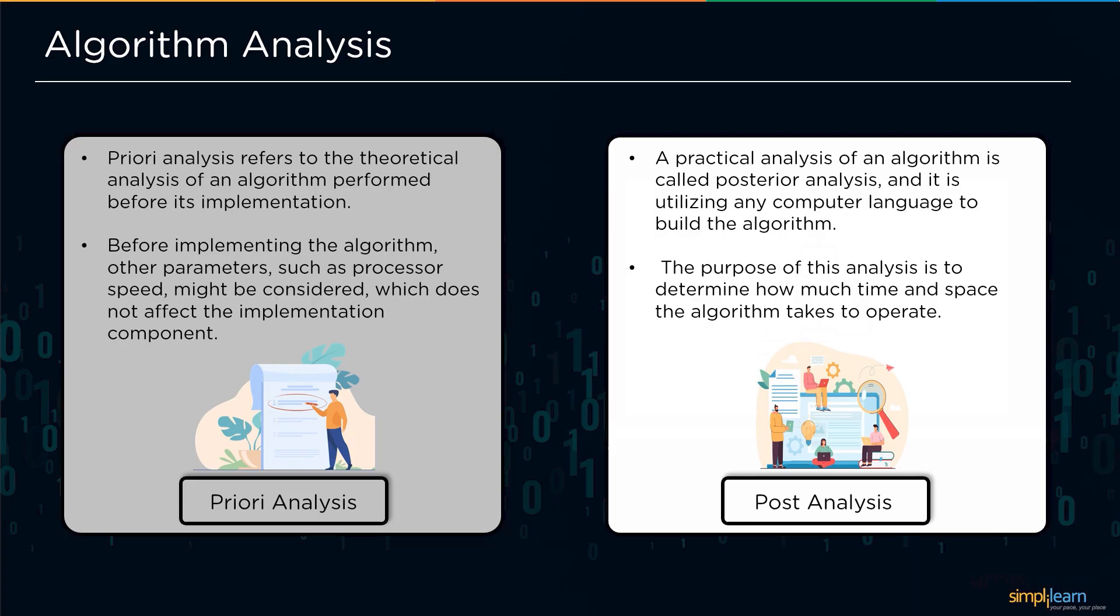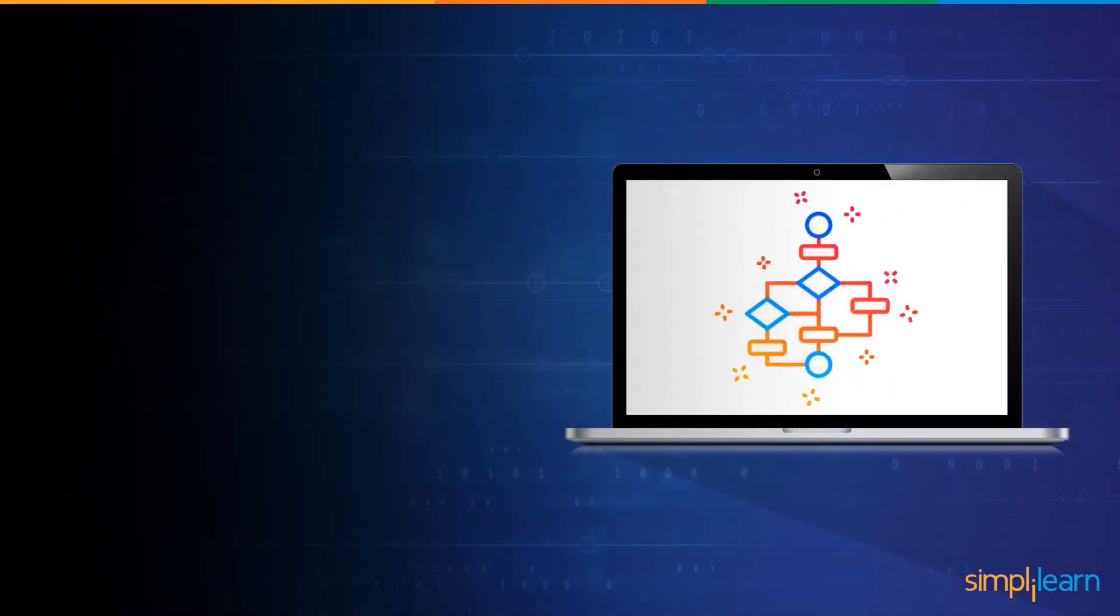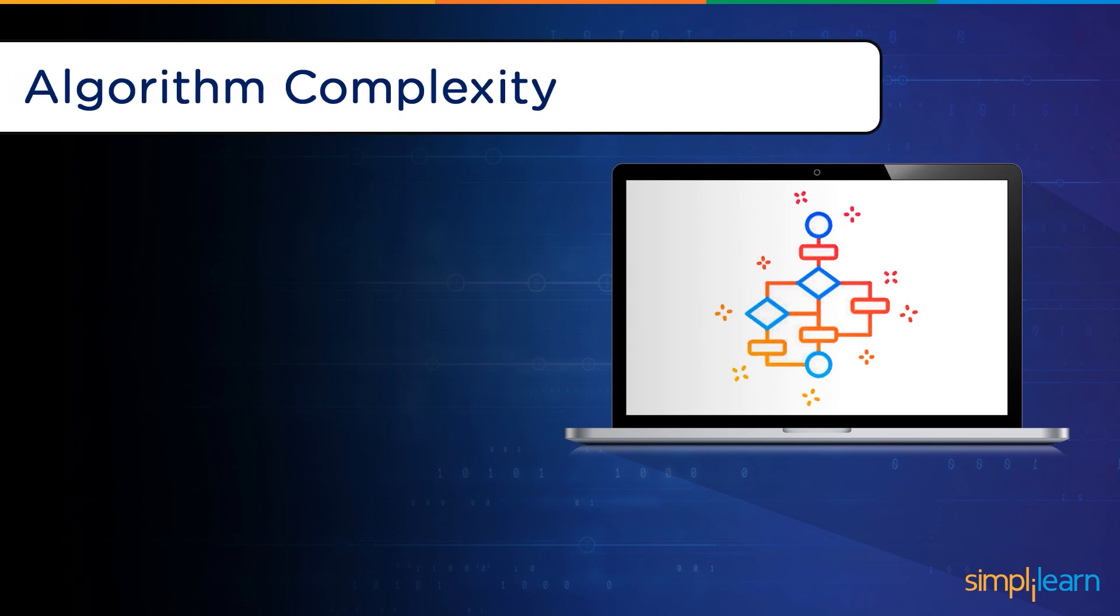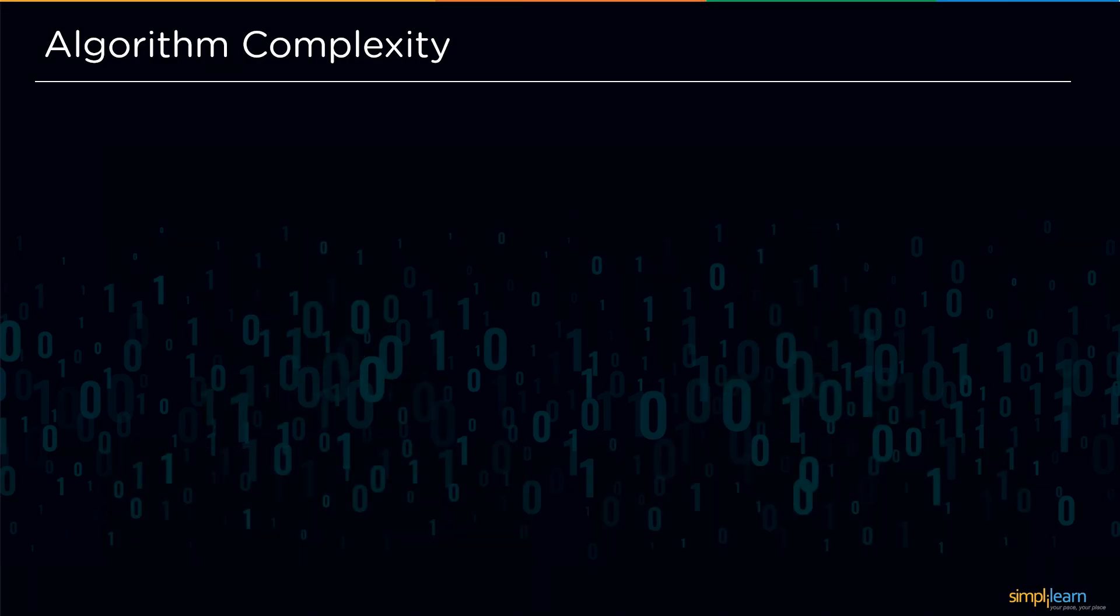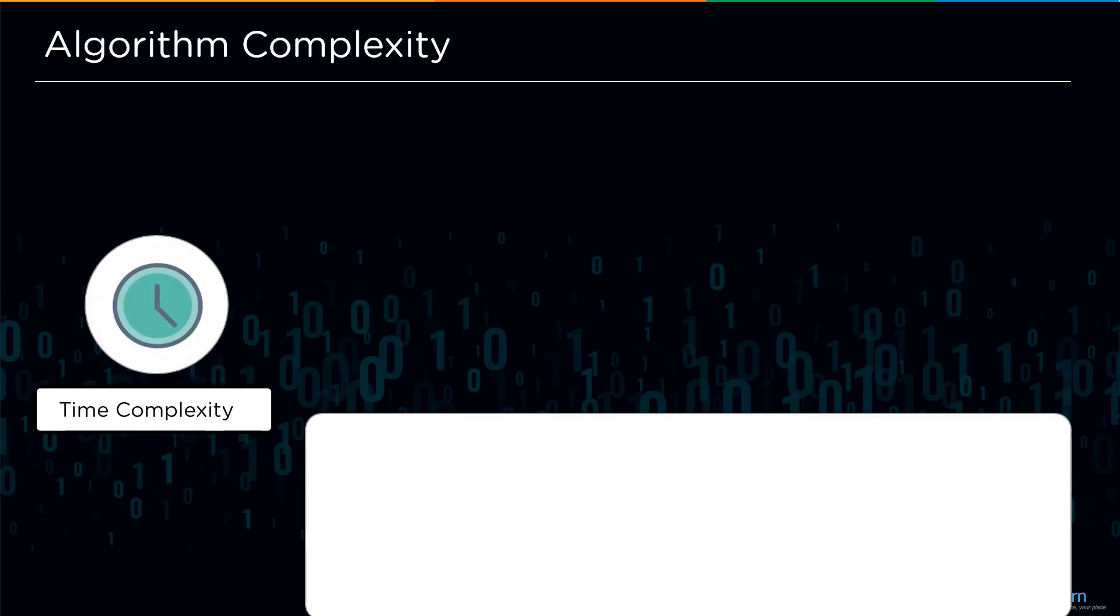Now after understanding the algorithm analysis, we will be able to comprehend the algorithm complexity. Two methods can be used to assess the algorithm complexity. The first one is time complexity, which states that the amount of time required to finish an algorithm's execution is known as its time complexity. The other one is space complexity, which is calculated by the quantity of space required to solve a problem and produce an output. Let's take a closer look at these complexities.